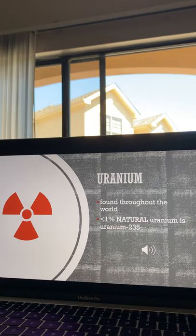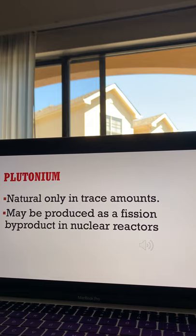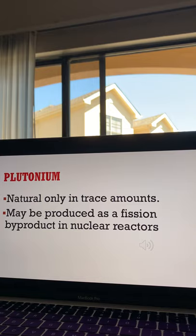Therefore, they tend to use plutonium. Plutonium, on the other hand, is very scarce — it only occurs in nature in very small trace amounts. However, it can be produced as an efficient byproduct in nuclear reactors. It can be separated by a process called reprocessing, and this process is a lot easier and cost effective.